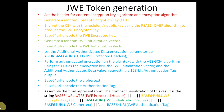This is the actual token generation process. I have color-coded each process in a different color. First, we set the header — setting the content encryption key algorithm and encryption algorithm. The content encryption key algorithm maps to ALG in the header, and the encryption algorithm maps to ENC in the header. Next is generating the content encryption key. Each time a token is sent, a new symmetric key is generated and used to encrypt the actual payload.